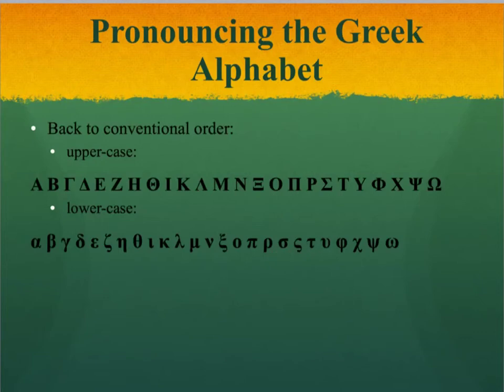Continuing the alphabetical order: Tau (T), Upsilon (U), Phi (F), Chi (H), Psi (PS), and Omega (O).